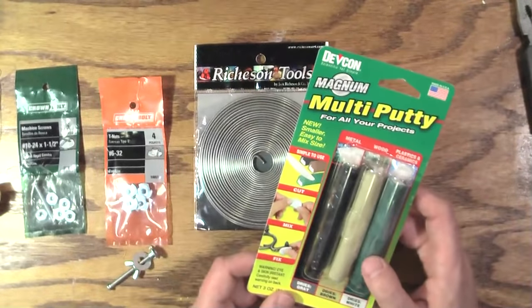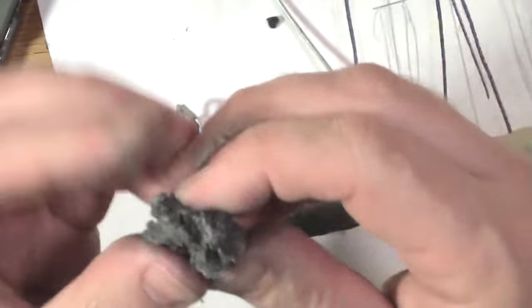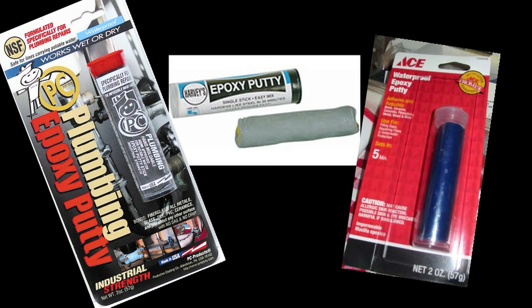Epoxy putty. All sorts of different kinds. Not epoxy glue. It needs to be the compound that you mix together to make a sort of a clay material that then sets up rock solid.